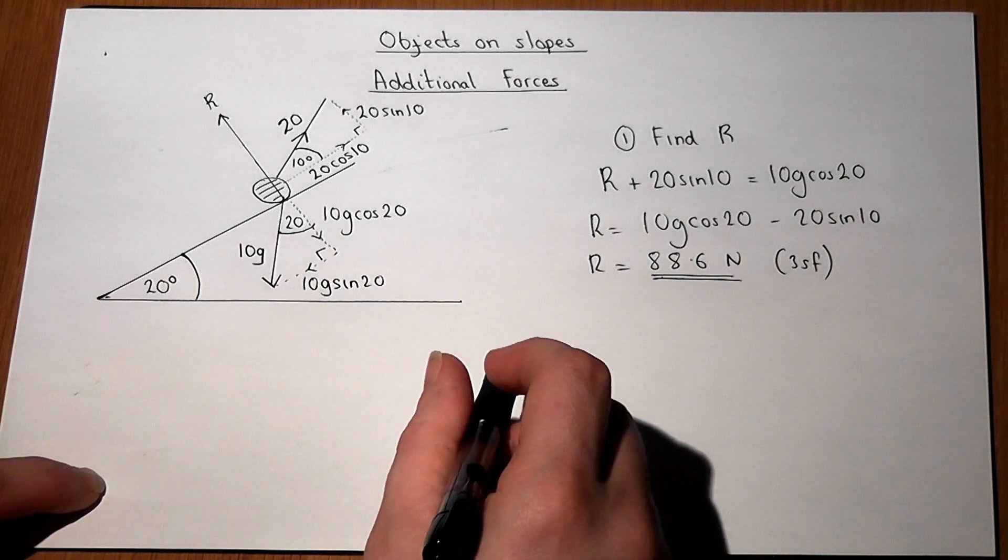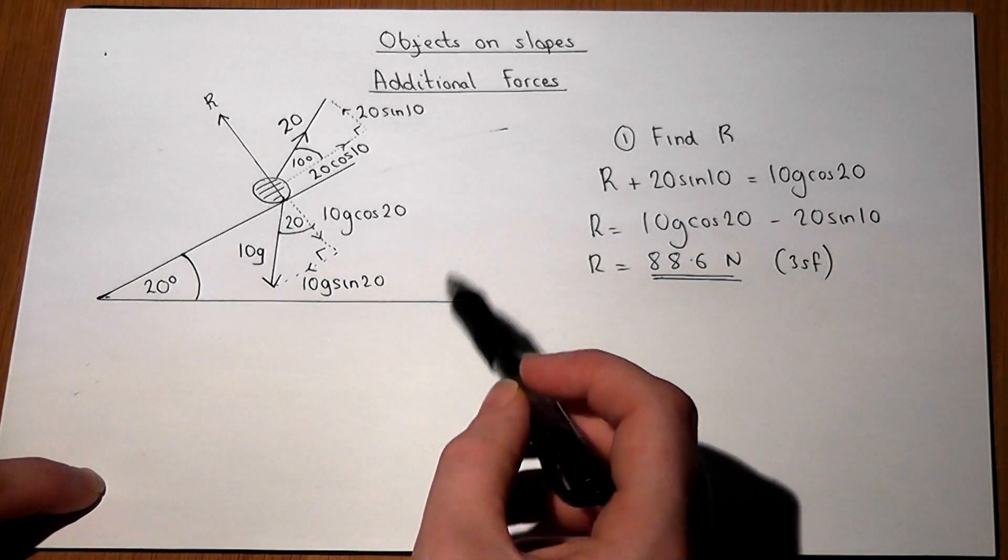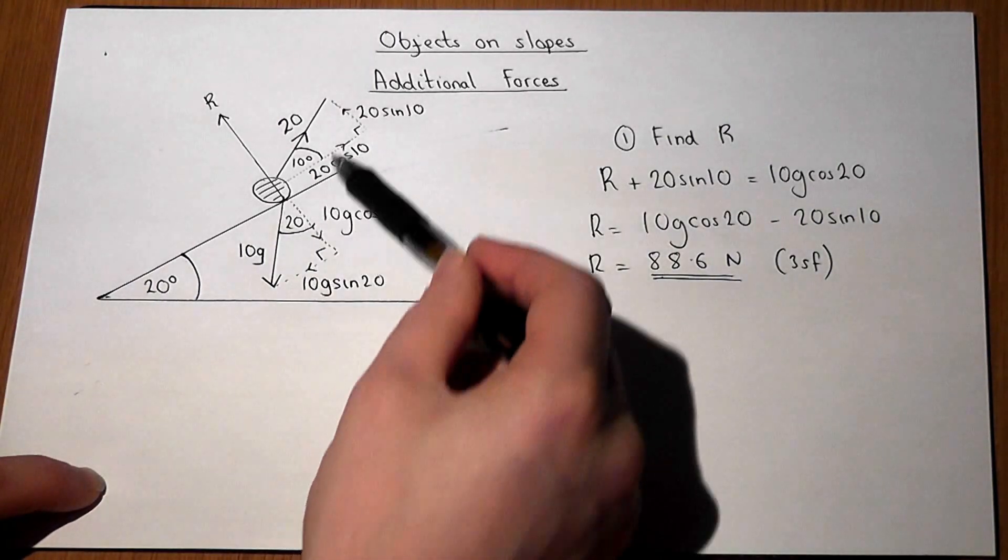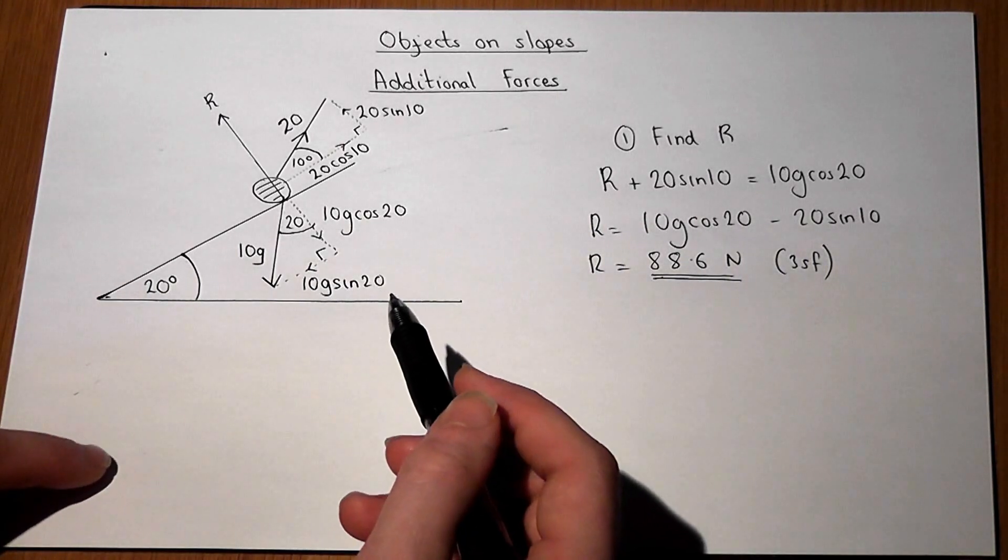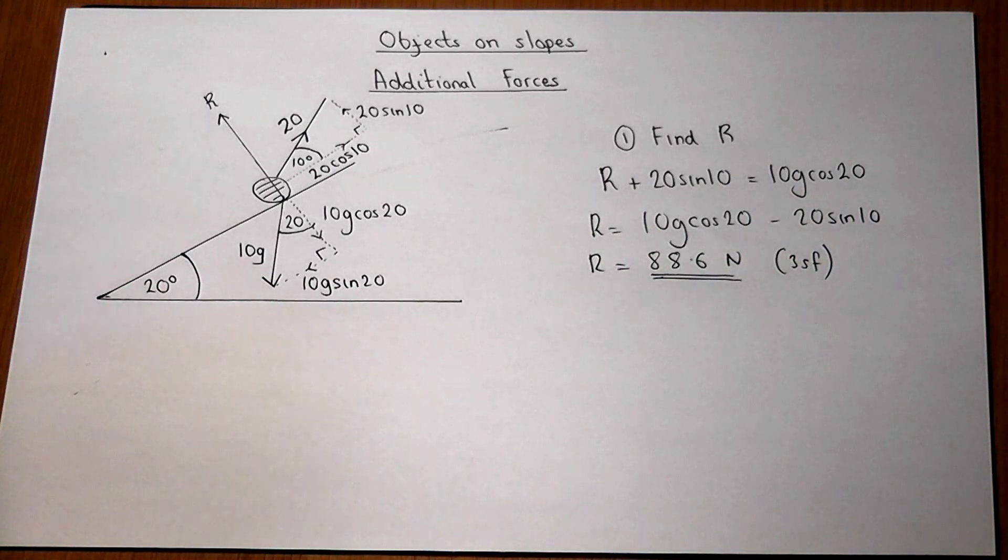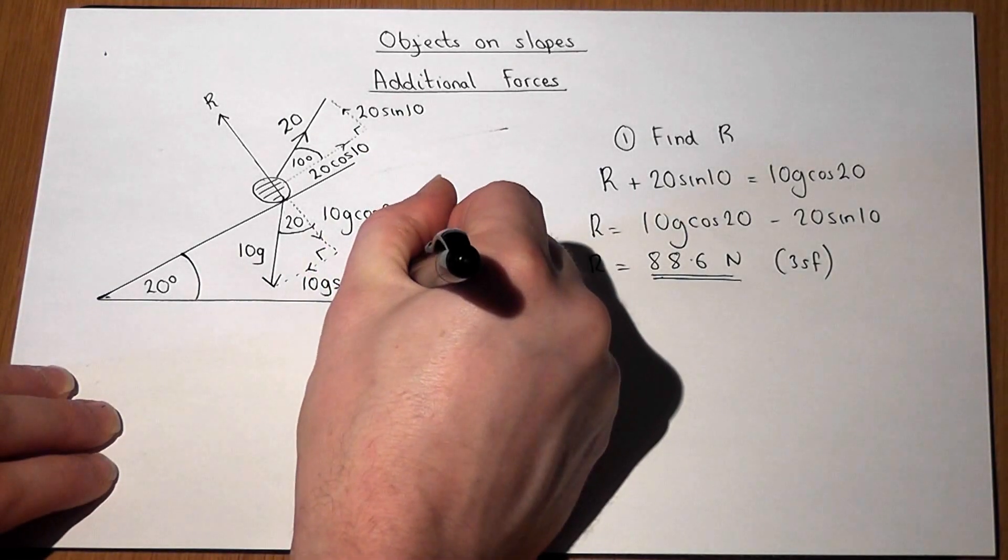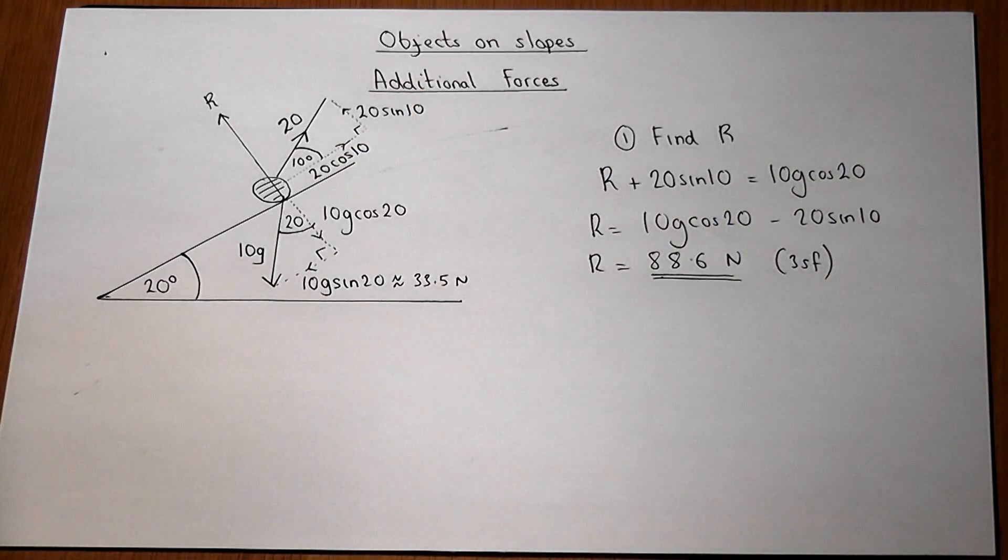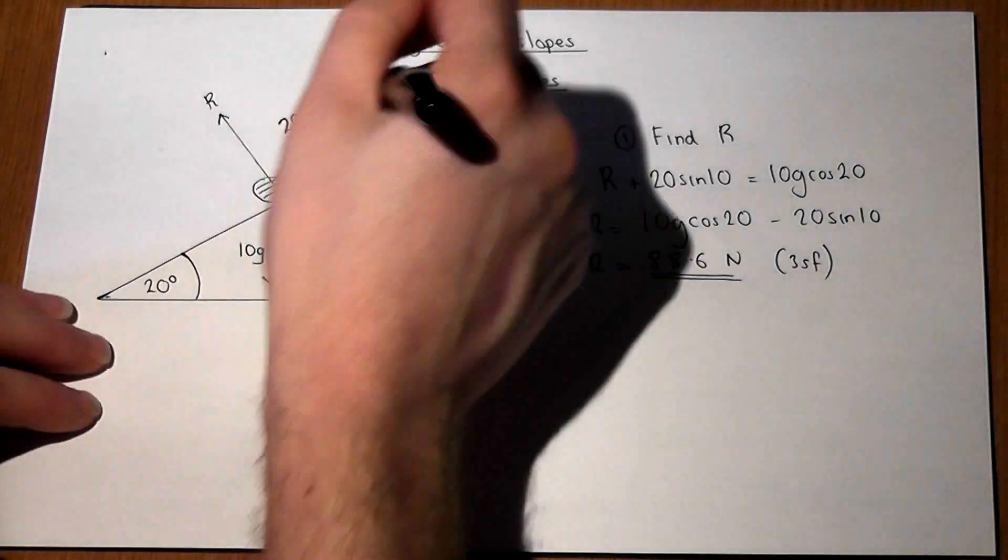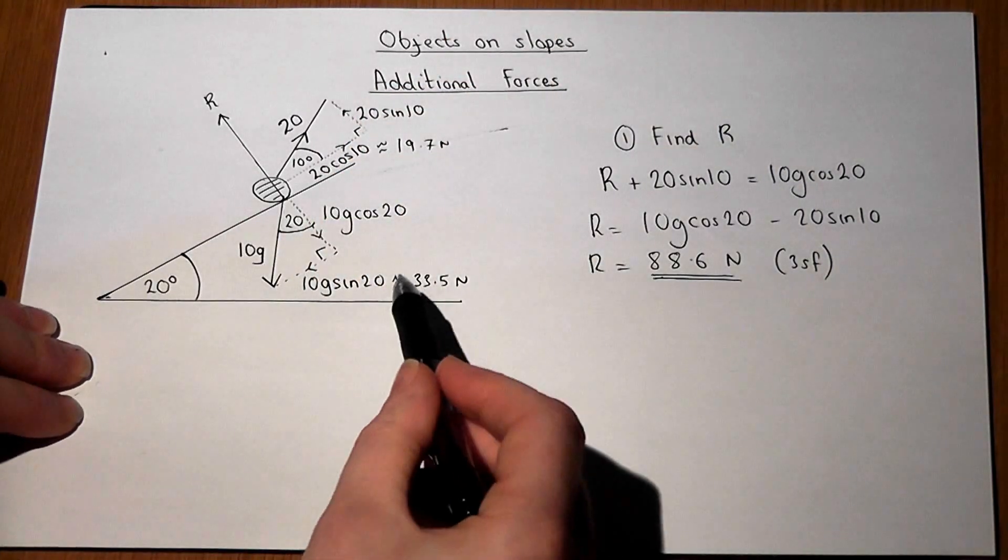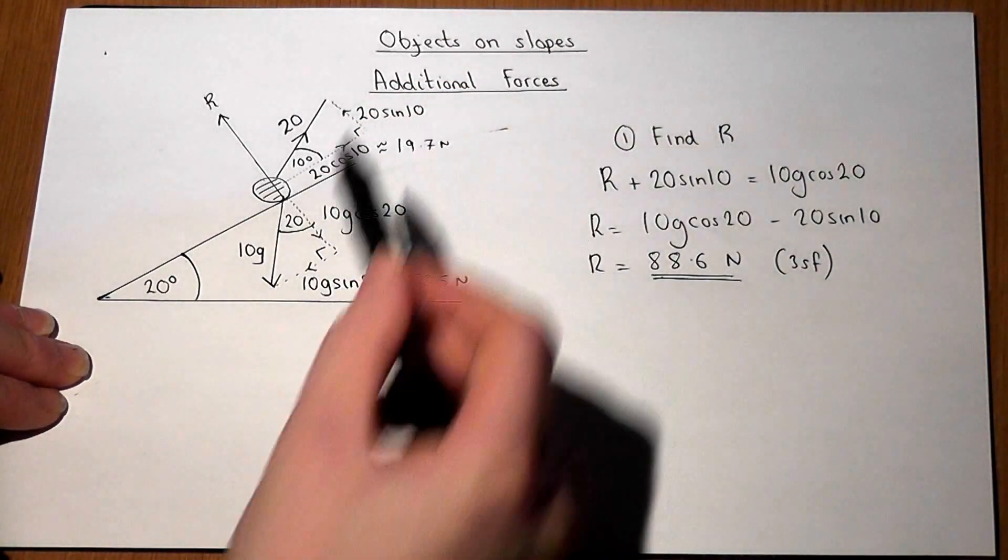The second thing we could find is what the object does down the slope. First of all, let's just compare the two components along the slope. There's a 10g sin 20 and a 20 cos 10. Now, 10g sin 20 equals approximately 33.5 N, and 20 cos 10, that's approximately 19.7 N. So this force here is greater than that force there. So therefore,